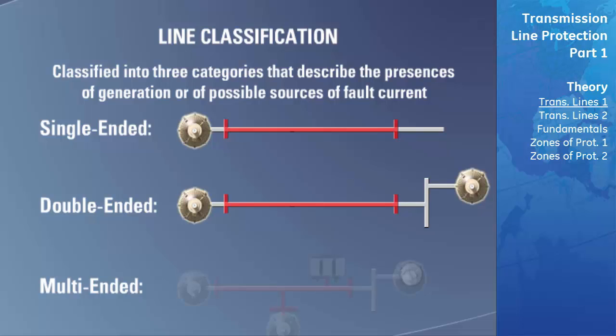A multi-ended line has more than two boundaries, each of which can have a source of fault current available. At the time of a transmission line fault on this type of line, the direction of normal power flow can be highly variable and the fault will be fed from many different locations. Sometimes the transmission line itself will be tapped to provide a source of power to a load. Distance protection is one method of protecting a transmission line in this configuration and will be covered in detail later in this section.